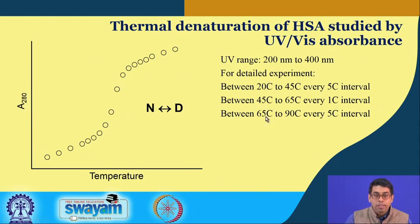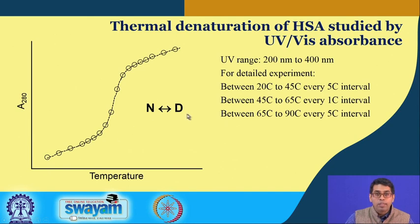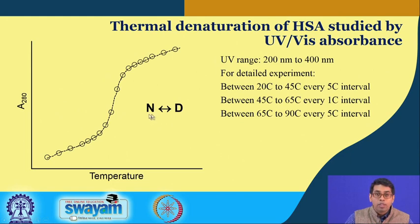This is a typical curve you will see if we perform an experiment like this. You collect spectra for each temperature between 200 to 400 nanometers and follow the absorbance at one particular point — in this case 280 nanometers — plotted versus temperature. It is very important to note that the absorbance at each point is contributed by two different states of the protein: either the native state or the denatured state.